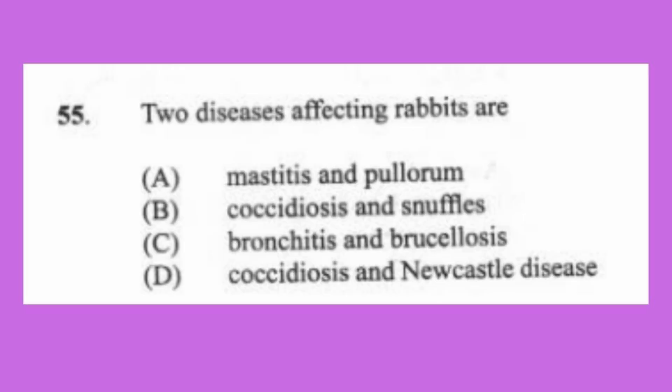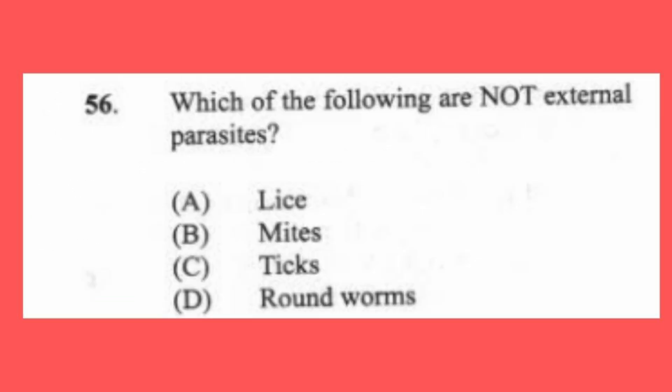Question 55: Two diseases affecting rabbits are (a) mastitis and pullorum, (b) coccidiosis and snuffles, (c) bronchitis and brucellosis, (d) coccidiosis and Newcastle. The answer is B, coccidiosis and snuffles. Question 56: Which of the following are not external parasites? (a) lice, (b) mites, (c) ticks, (d) roundworms. The answer is D, roundworms.